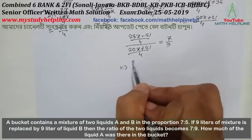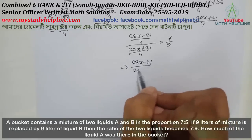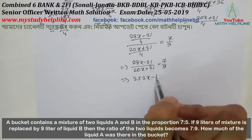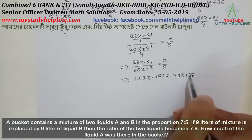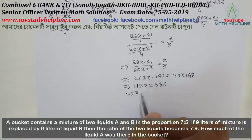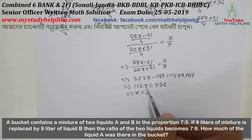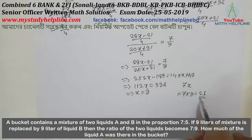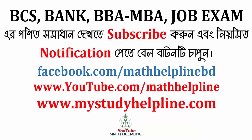Simplifying with factor of 4: 28x minus 21 divided by 20x plus 21 equal to 7 divided by 9. Cross-multiplying: 252x minus 189 equal to 140x plus 147. Therefore 112x equal to 336, giving x equal to 3. So the amount of liquid A in the bucket was 7x equal to 21 litres. Thank you.